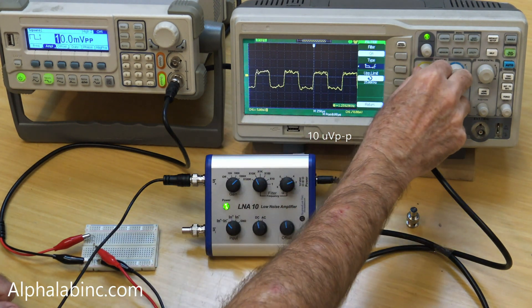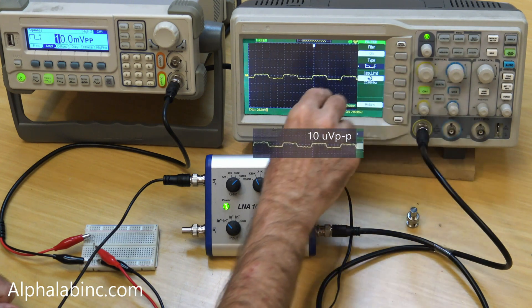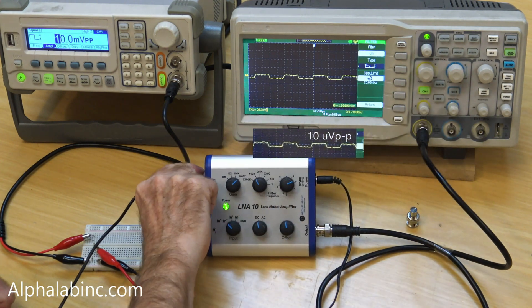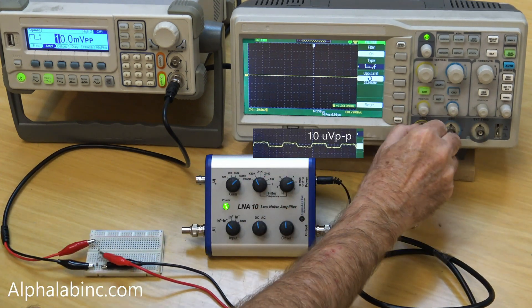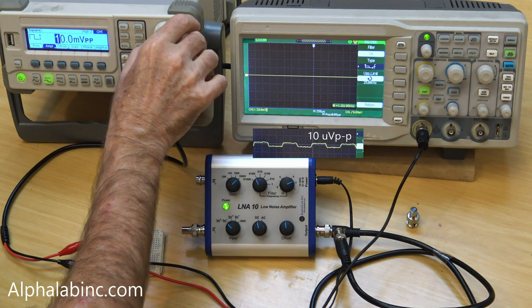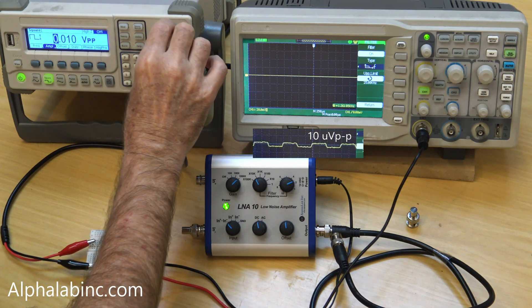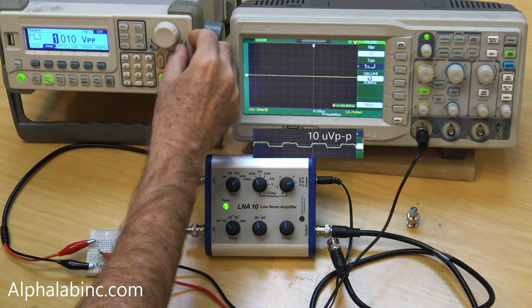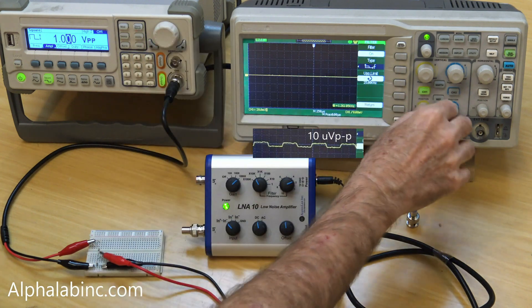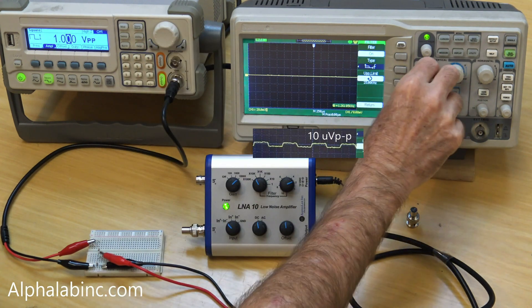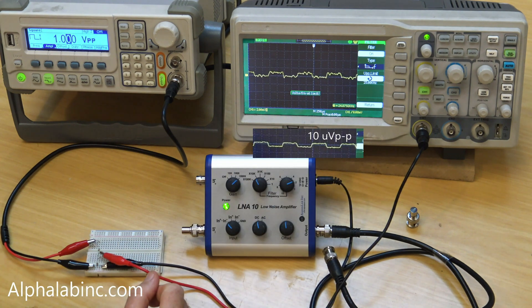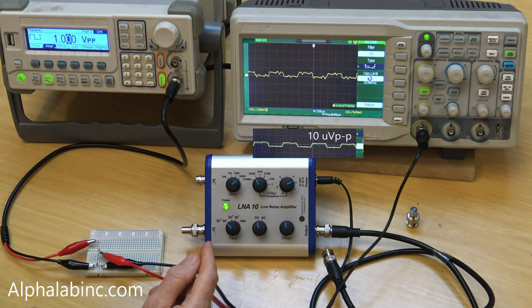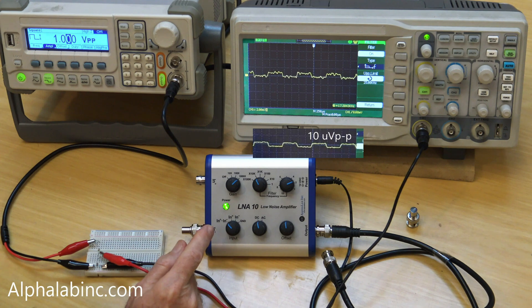For comparison, I'll reduce the size of the scope screen and then reconnect the signal directly to the scope. Obviously the scope cannot resolve 10 microvolts, which is the amplitude right now, so I'll increase the signal by a factor of 100 to 1000 microvolts peak to peak. Even at a narrow 25 kilohertz bandwidth, the 1000 microvolts signal going directly into the scope is not as clean as a 10 microvolts signal that's amplified with a differential probe.